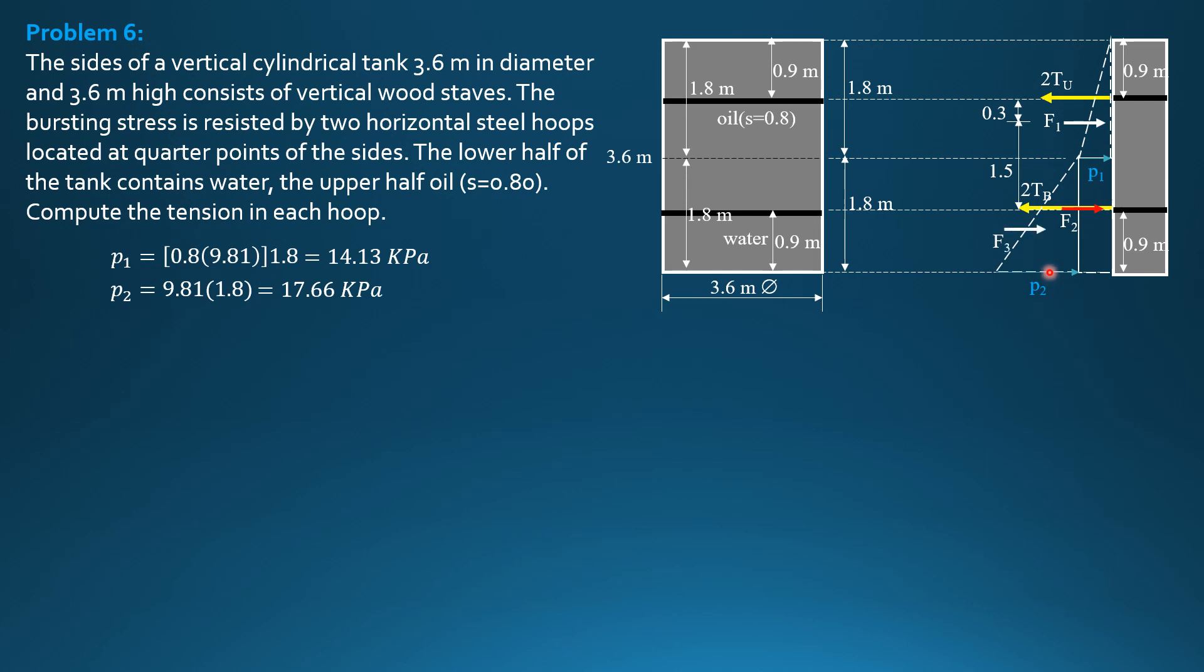Then F3 would be this, one third of 1.8 from the bottom, so 0.6, its distance from the top. So is 0.6 from the bottom, so 0.3, this is 0.3 plus 1.8, 2.1 from the upper hoop. That's it.